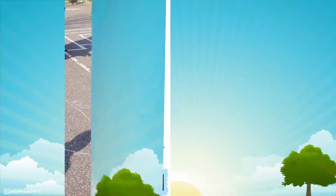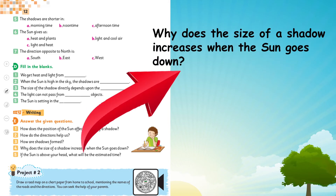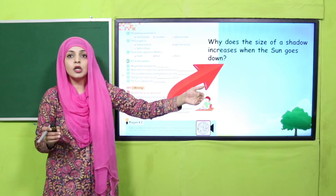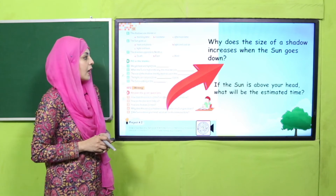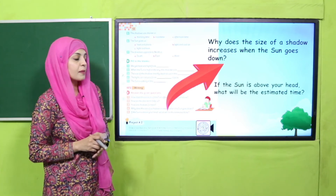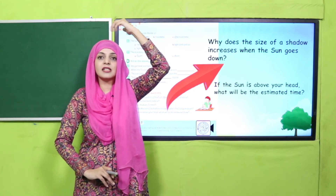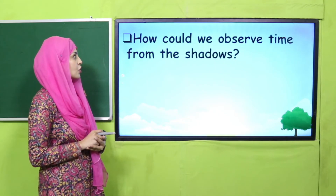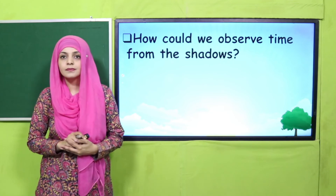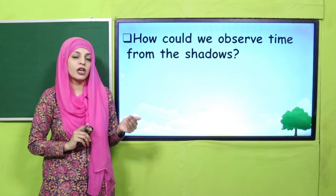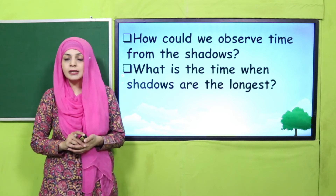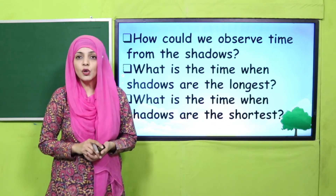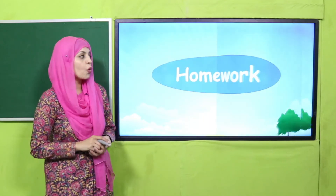Why does the size of a shadow increase when the sun goes down? When the source of light is lower, the shadows are the longest - that's why. If the sun is above your head, what will be the estimated time? Shadows will be shortest - it will be noon time. Very good. For evaluation: how could we observe time from the shadows? By looking at the size and position of the shadow we can tell the time. What is the time when the shadows are the longest? It may be morning or afternoon. What is the time when the shadows are the shortest? It is noon time.